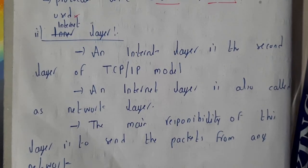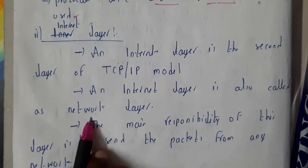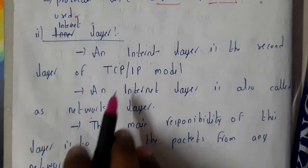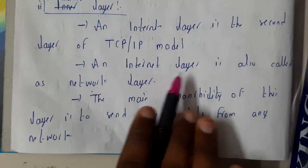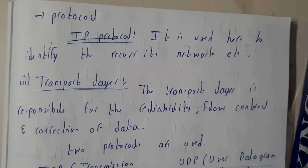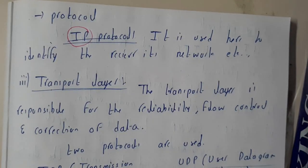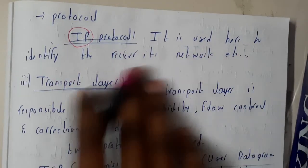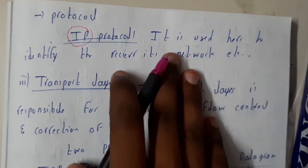The internet layer is the second layer of the TCP/IP model, also called the network layer. Its main responsibility is to send and transmit packets from the network to the receivers. An important concept here is the IP address, which is a unique code assigned to a particular user or device to identify the receiver.